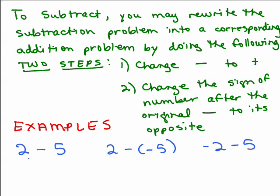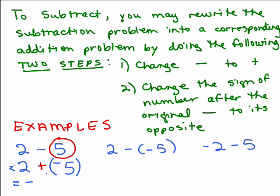Here's an example: 2 minus 5. You change the minus sign to a plus sign, and then take the opposite of the next number. The number after the minus sign is 5, so we write the opposite of 5, which is negative 5. Now this becomes an addition problem — you can put parentheses around it if you want. We're adding a positive and a negative; the negatives outweigh the positive, so it's negative, and 5 minus 2 gives us negative 3.